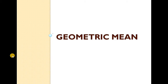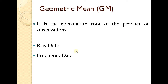Today we are going to discuss the geometric mean. The statistical average is not a problem. The geometric mean is the appropriate root of the product of observations. If you have a set of observations, it is the nth root of the product, considering root and frequency.